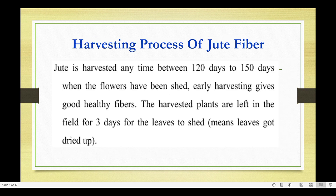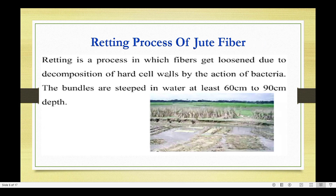The second is the harvesting process of jute fiber. Jute is harvested anytime between 120 to 150 days — that is the lifecycle of jute fiber. Early harvesting gives good, healthy fibers. The harvested plants are left in the field for three days for the leaves to shed and dry up.